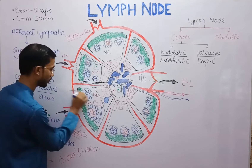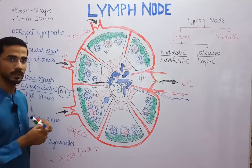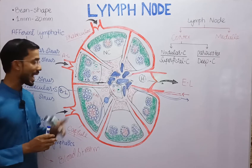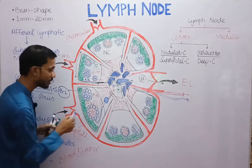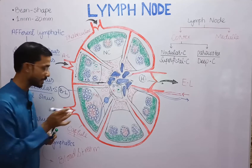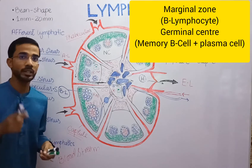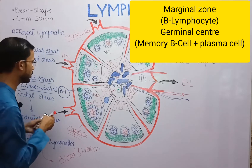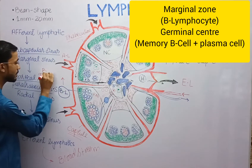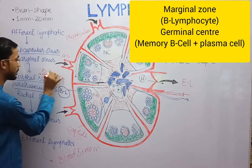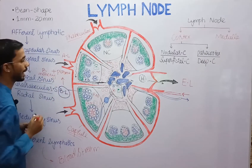In primary nodules, B lymphocytes are present in an inactive form. When B lymphocytes become activated, they convert the primary nodule into a secondary nodule. In secondary nodules, B lymphocytes move towards the periphery and convert into two types: memory B cells or plasma cells.